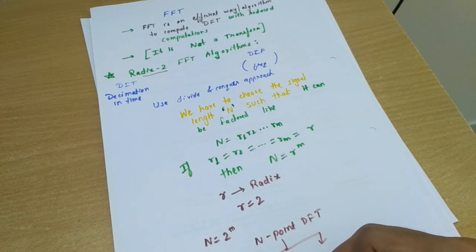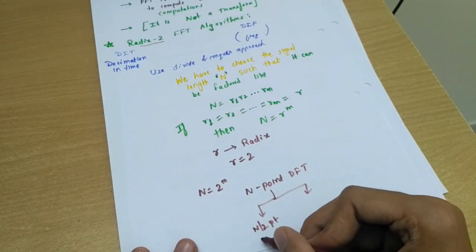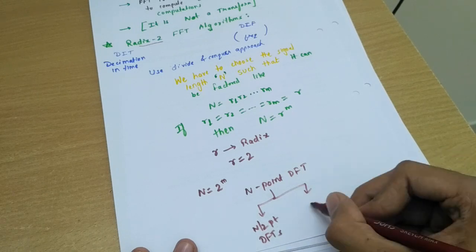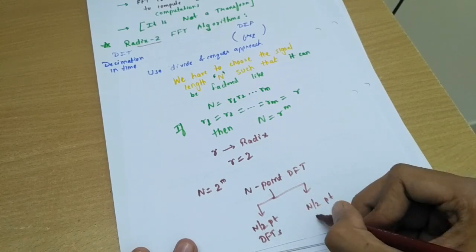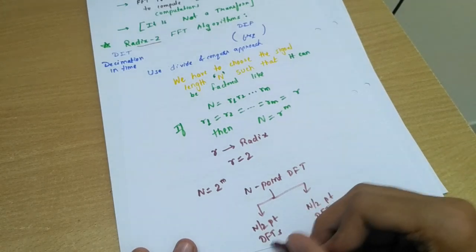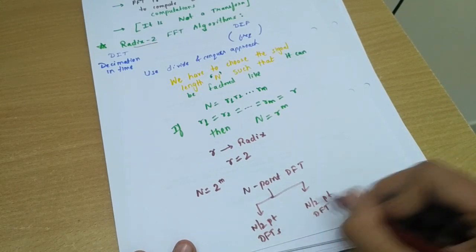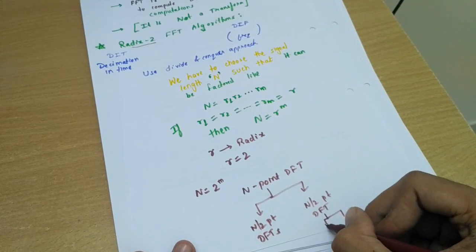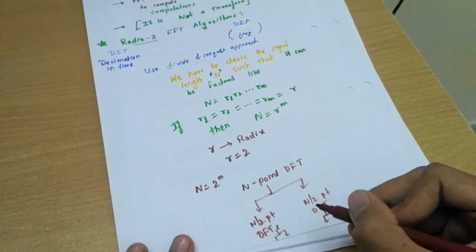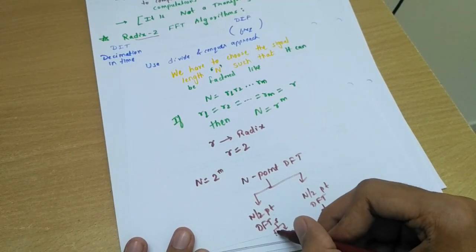So n-point DFT we will break into 2 N by 2 point DFTs. This is why N by 2 point DFT. Then again this N by 2 point DFTs are broken into N by 4 point DFTs.